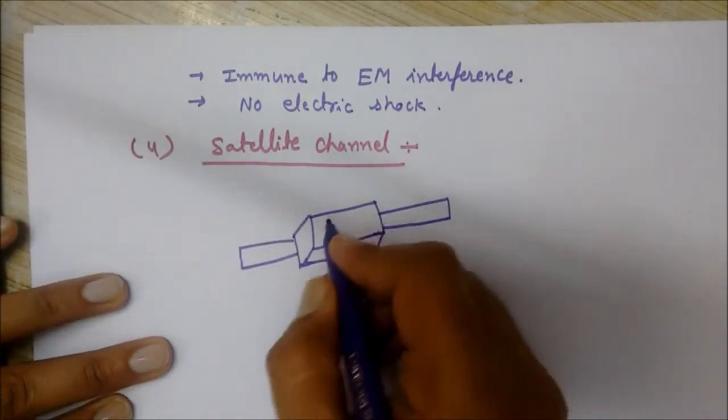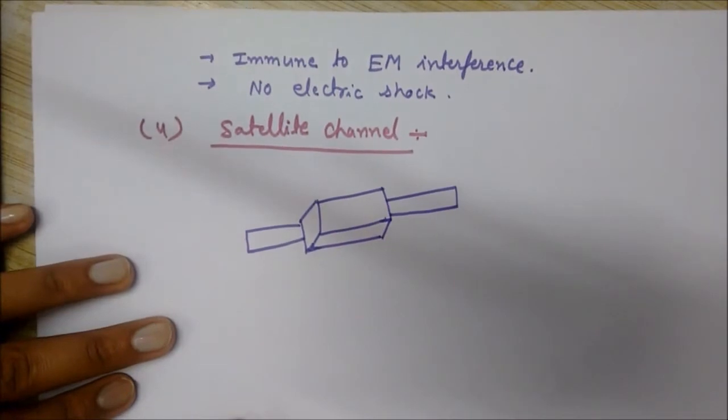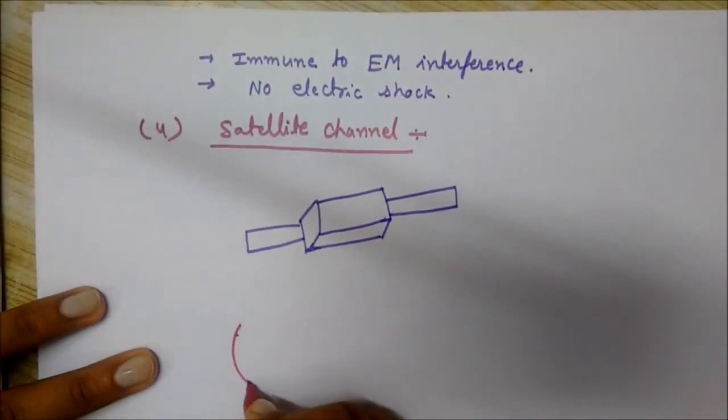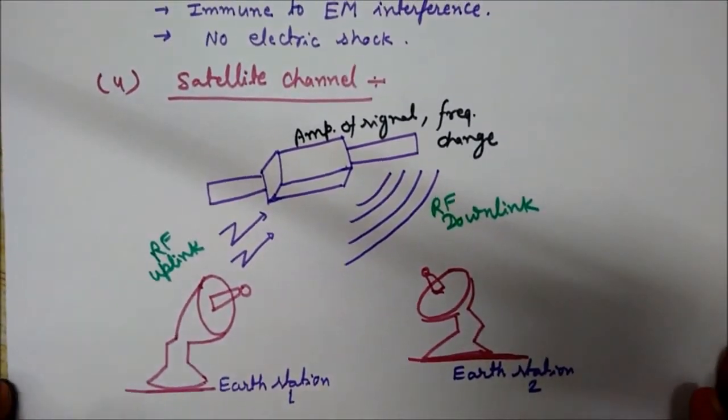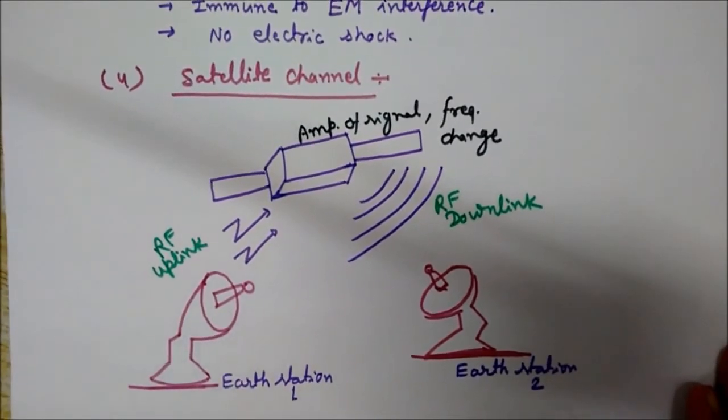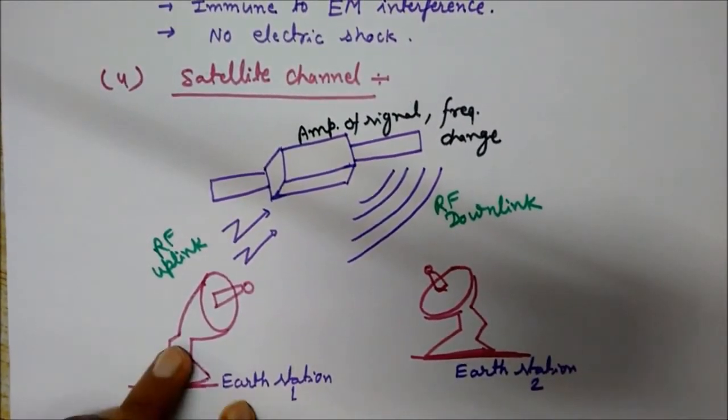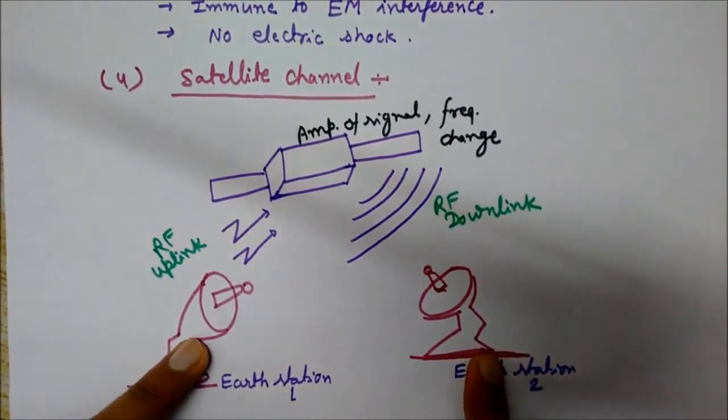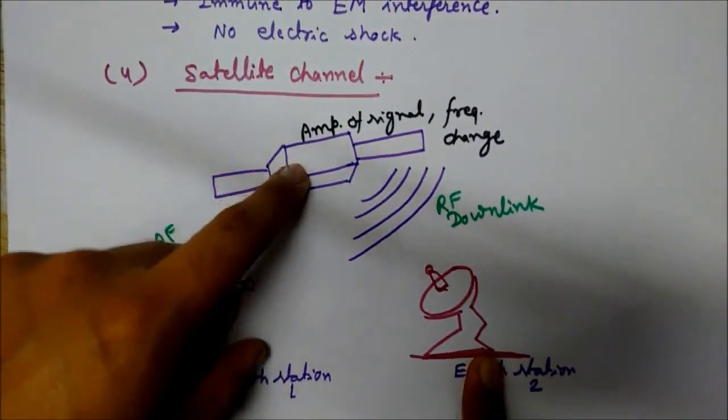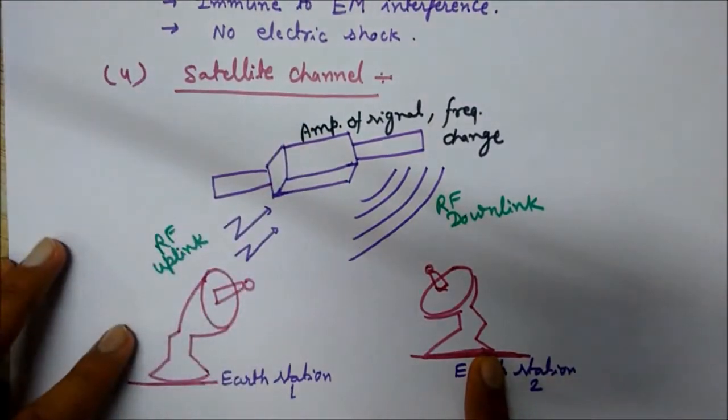This is a satellite in space and here we have a station. Here is the diagram of satellite communication. These are the two stations situated on the earth and here is the satellite itself.